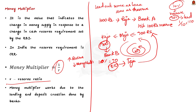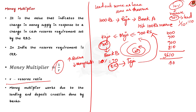Let us do some calculations. RBI printed only 1000 rupees. Raja has 1000 rupees in his deposit account, Maja has a loan of 900 rupees, Kaja has 900 rupees deposited in Bank B, and Taja has a loan of 810 rupees. Through the banking system, the 1000 rupees multiplied to 3610 rupees. This is an example of how the money multiplier can potentially increase the money supply several times. By reducing the CRR, the RBI can increase the money supply in the economy.